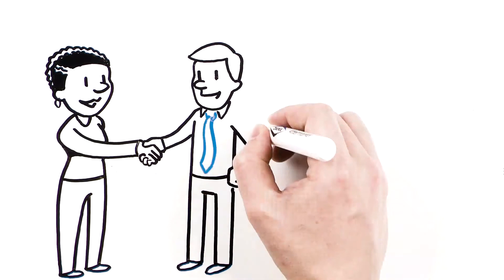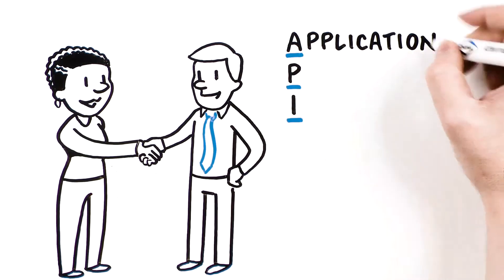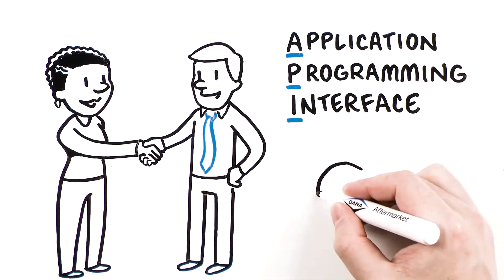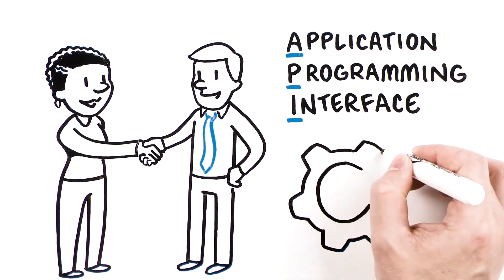Wendy learns from her Dana sales rep that an API, or Application Programming Interface, is a translator between two systems that might not speak the same language.